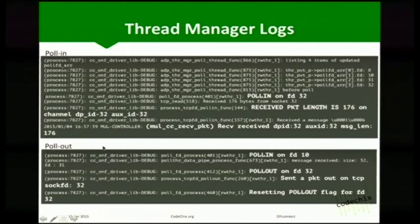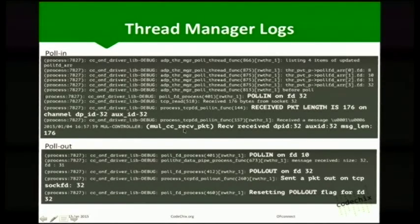Looking at pull-in and pull-out logs: FD8 is the control pipe, FD10 is the data pipe, and FD31 and FD32 are two sockets being polled. We get a pull-in on FD32 — the incoming packet is received and the controller callback is triggered. For pull-out, there are two polling events: first, a pull-in on FD10 (the data pipe) puts the packet in the hash table and sets the pull-out flag. Then pull-out occurs on the outgoing FD, the packet is sent out on the wire, and the pull-out flag is reset.